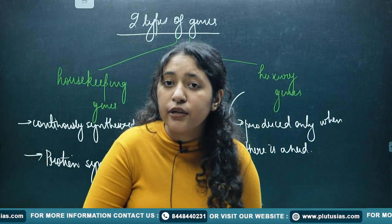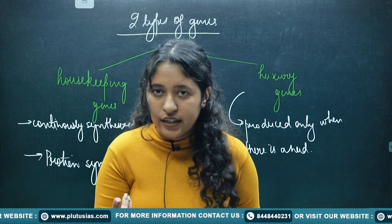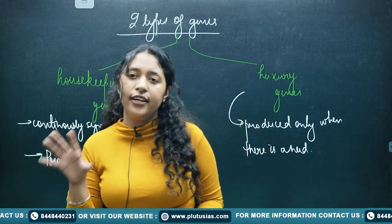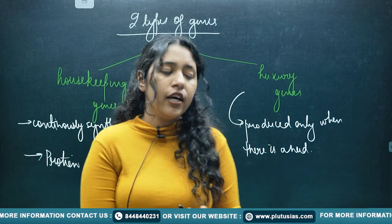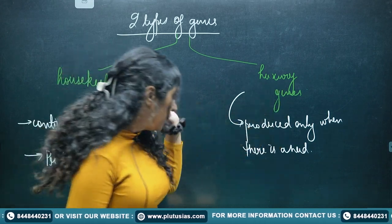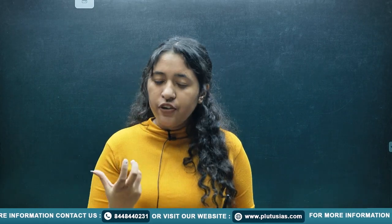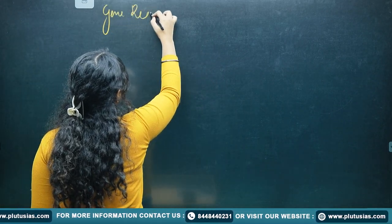Regulation means whether genes should be produced or not, and what quantity should they be produced in. Housekeeping genes do not require regulation because they are continuously needed in the cell. But luxury genes are needed only at a specific time or condition, so we need regulation for them. It is better to study gene regulation through the prokaryotic model because prokaryotes are simpler organisms.